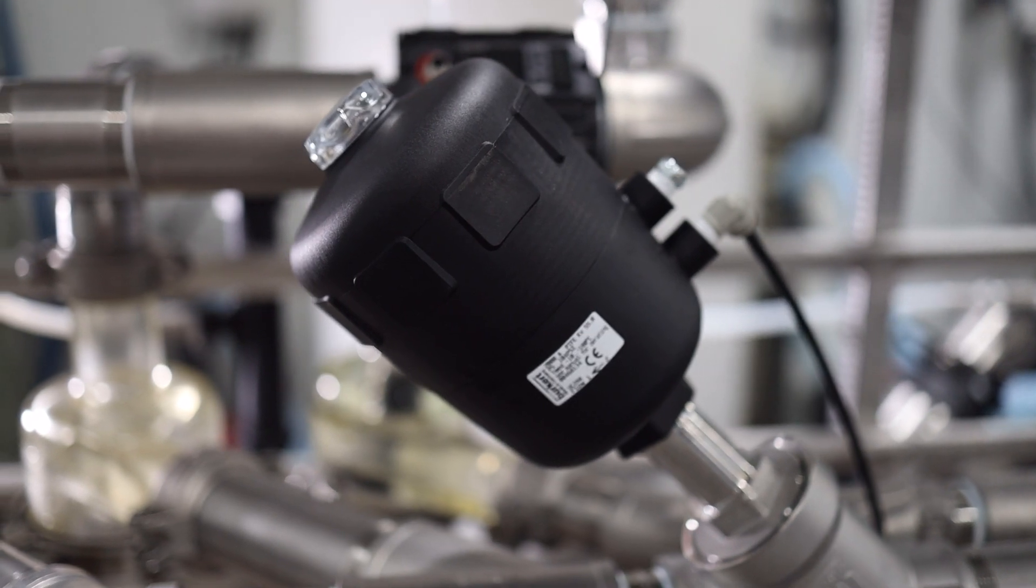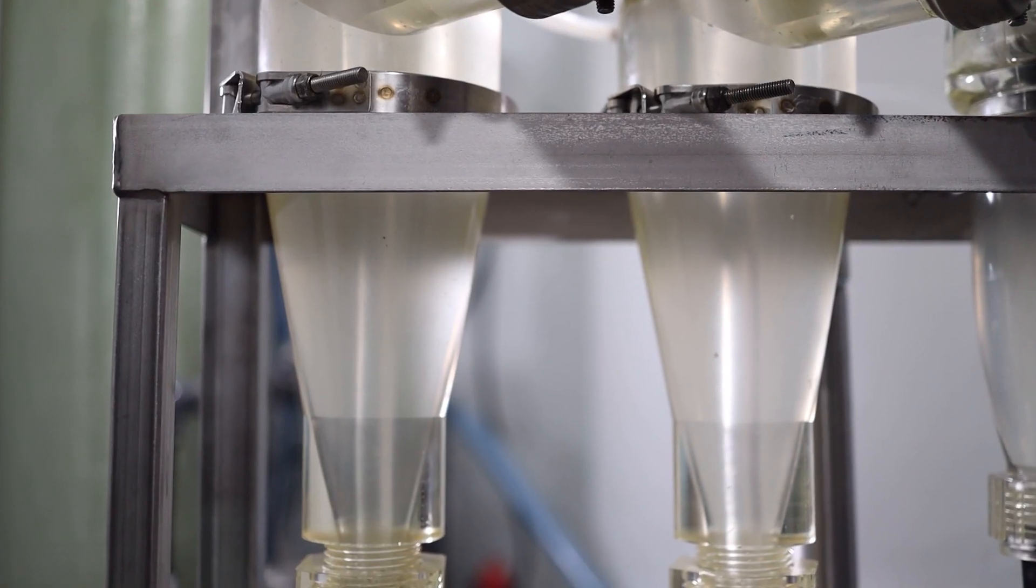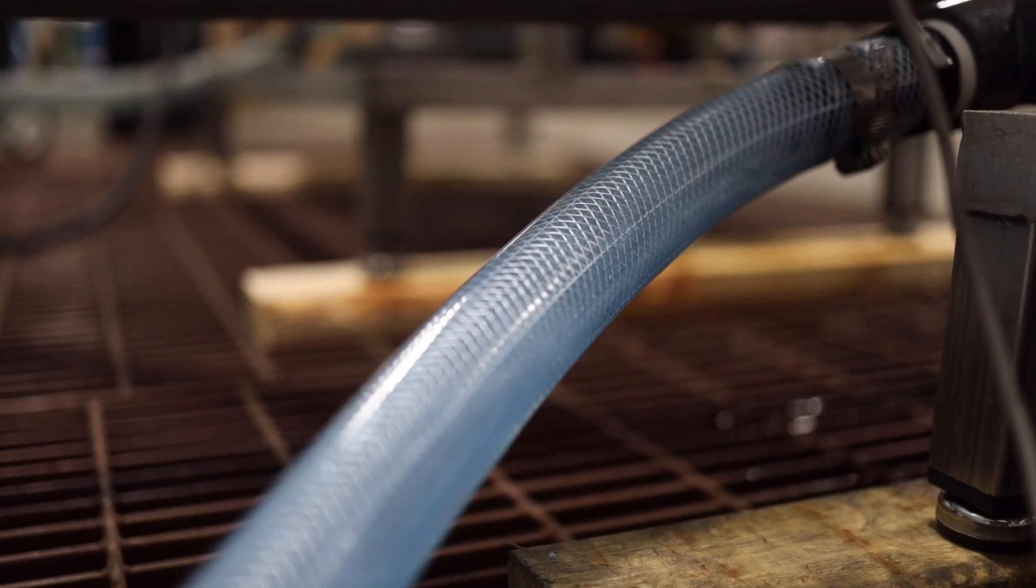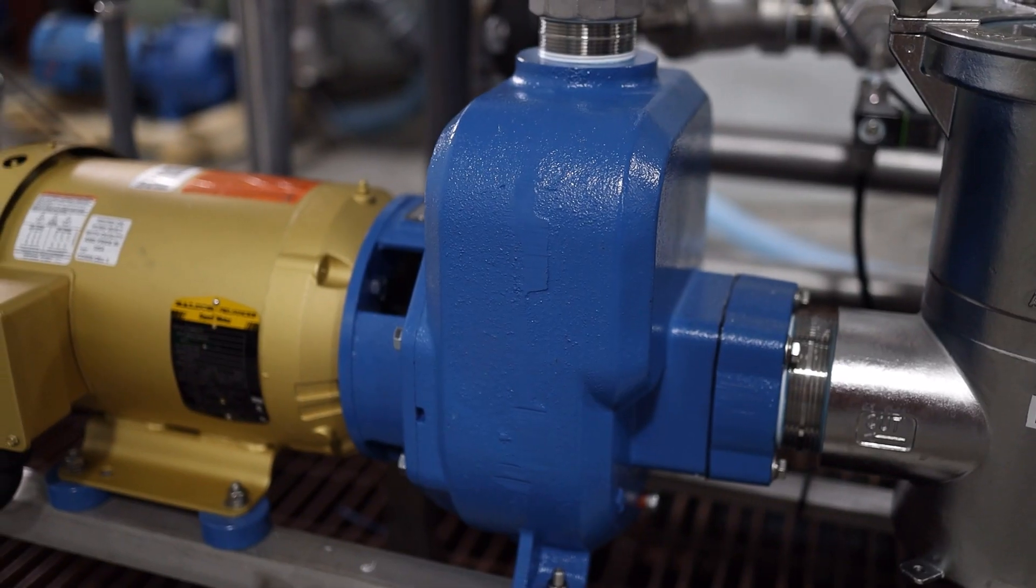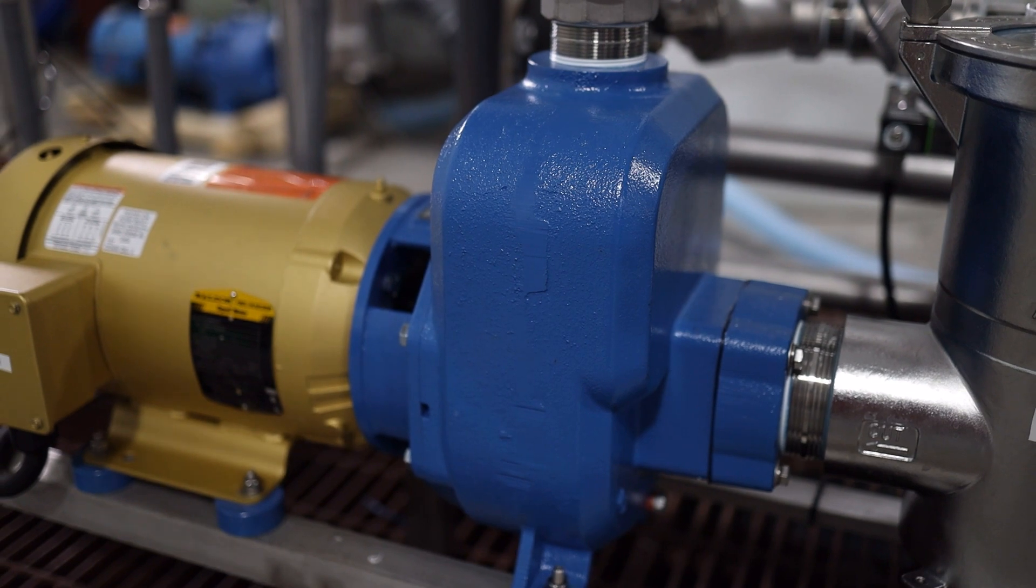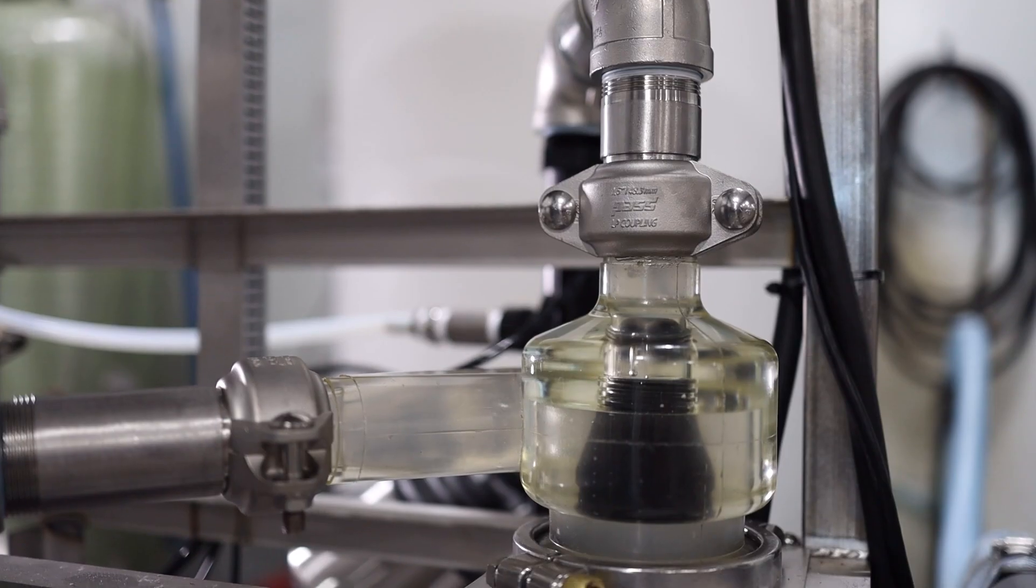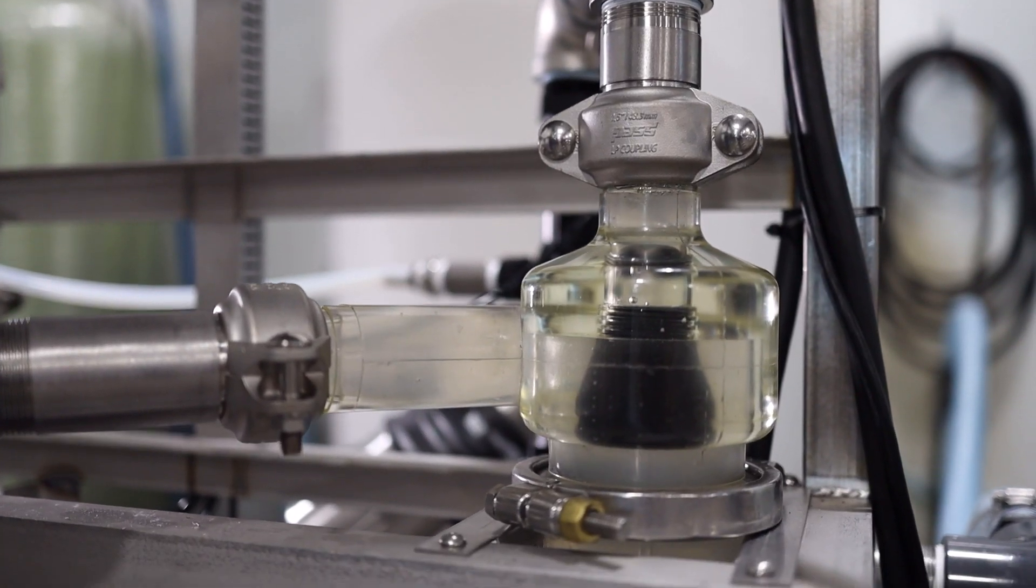The primary valve opens to deliver water to the process cyclones. Each is engineered to pass 50 gallons of water per minute. The unit is controlled by a pressure transducer to manage the pressure going into the cyclones and regulated pressure going to the car wash.